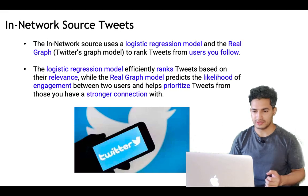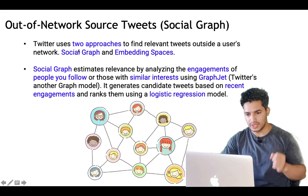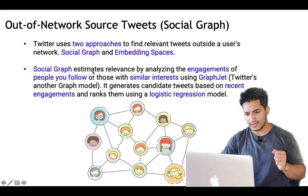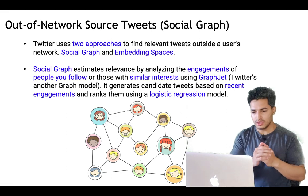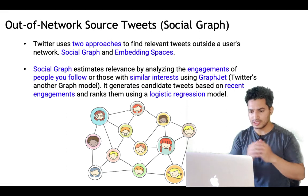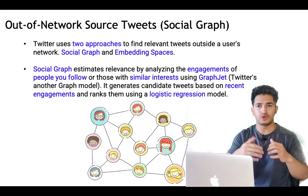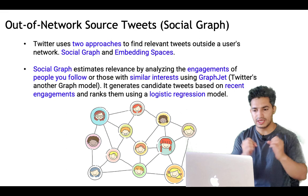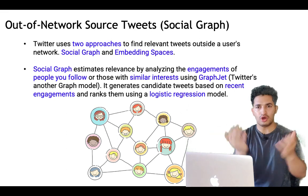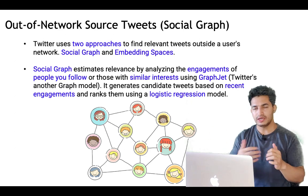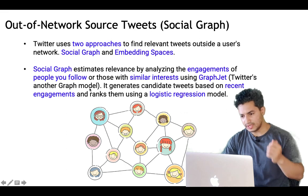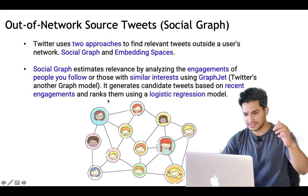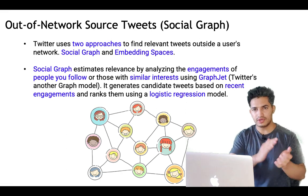For out-of-network source tweets, Twitter uses two approaches to find relevant content outside a user's social network. The first is the social graph, and the second is embedding spaces. The social graph estimates relevance by analyzing the engagement of people you follow or those with similar interests, using GraphJet — another graph model from Twitter. Content that people in your network are engaging with, or that users with similar interests are engaging with, is sourced. GraphJet generates candidates based on recent engagement and ranks them using a logistic regression model.